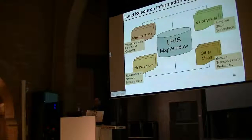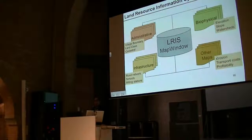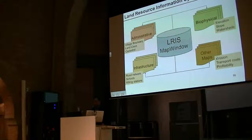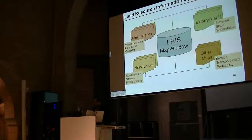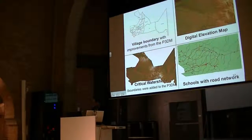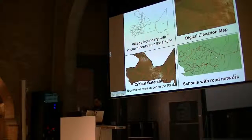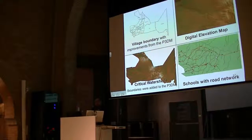We want them to view the maps and use them for their own planning needs without us — because we can't stay in the community for long. It's an international development cooperation project, so we can stay for maybe four or five years, and then we leave. If we leave without leaving them the data, it feels like just extracting information from the community and not sustaining our activities at all. These are some examples of the maps developed with the community: village boundary maps refined with village leaders, digital elevation map, critical watersheds using the watershed delineation tool, and schools with the road network.